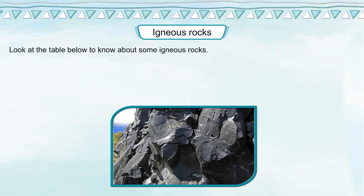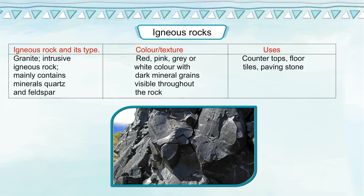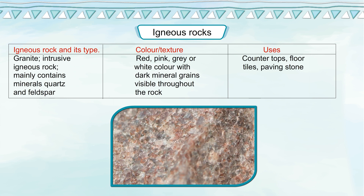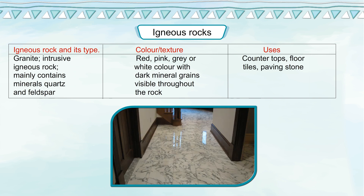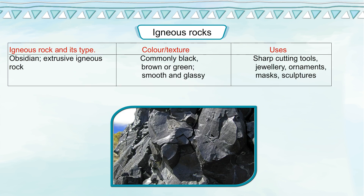The following table describes some igneous rocks. Granite is an intrusive igneous rock, mainly containing minerals quartz and feldspar. It is red, pink, grey, or white in colour with dark mineral grains visible throughout the rock. It is used for countertops, floor tiles, and paving stone.